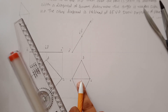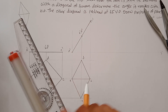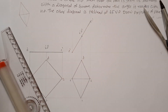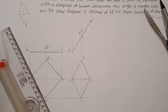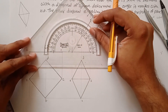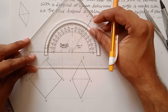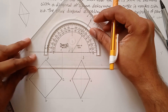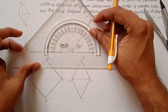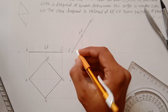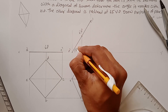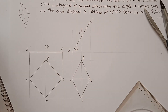This is your intermediate position. You need to find out this angle, so measure the angle. This angle is around 55 degrees.